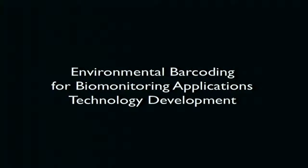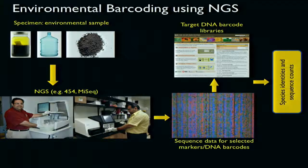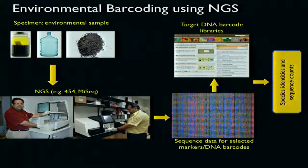We started environmental barcoding to deal with the biomonitoring problems. What we do is get samples without separating them — a jar of insects, water, soil — and then utilize next-generation sequencing technologies like 454 and MiSeq. We haven't invested in a genome center because what we really want to do is go under the hood and break these technologies to learn about them and develop new applications. Once the technologies are built, they can migrate to genome centers or other places.